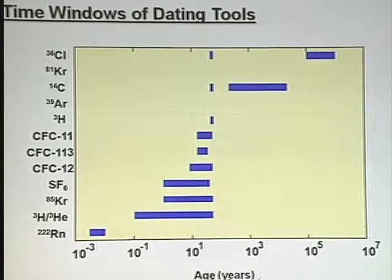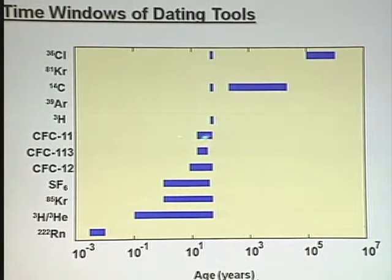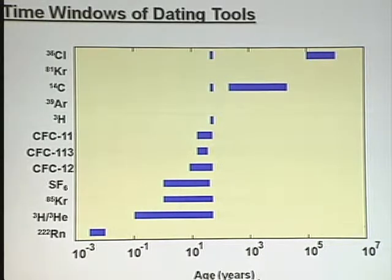There are a number of different traces that can estimate groundwater ages, and I've only spoken today about a few of them. But we actually have a whole suite of different traces and they work over different time ranges. CFCs, for example, can date water from about 5 years old to about 50 years old, which is shown here. Carbon-14 from a couple of hundred up to about 20,000. They work over different ranges.